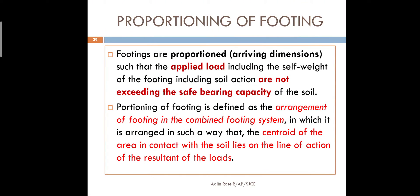In proportioning of footing, we are concerned with the dimensions of the footing. The main background agenda is that using whatever dimensions you arrive at, the pressure should not exceed the allowable bearing capacity of the soil. For a combined footing with two columns, the two columns carry different loads. When you add the loads you get the resultant load, and the resultant load will act at the centroid of the combined footing.